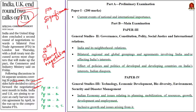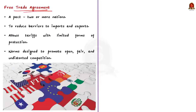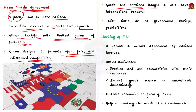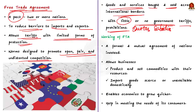In this context, let us quickly go through what is an FTA, its significance and impacts. The syllabus relevant to this news article is highlighted for your reference. A free trade agreement is a pact between two or more nations to reduce barriers to imports and exports. Importantly, as the name implies, a free trade agreement does not actually mean trade free from restrictions — it still allows tariffs and in limited circumstances other forms of protection. It is a set of norms designed to promote open, fair and undistorted competition.